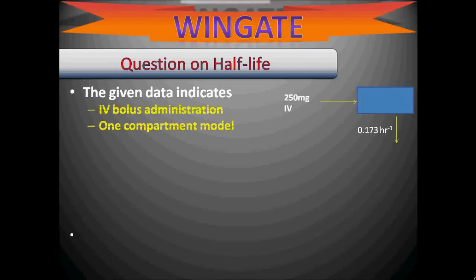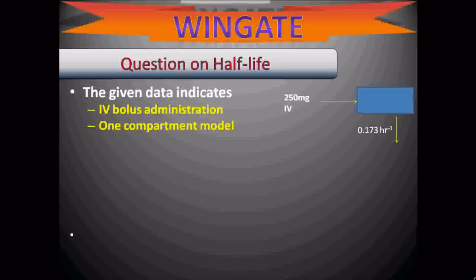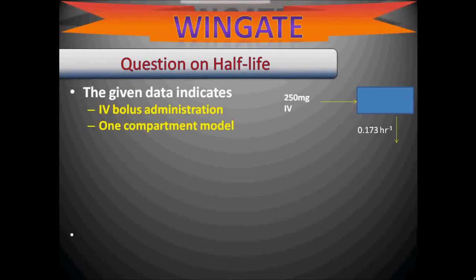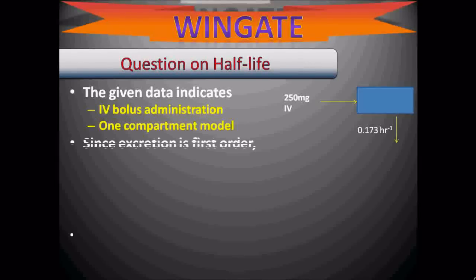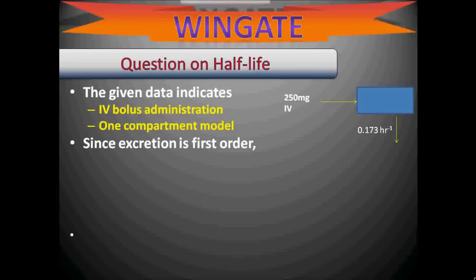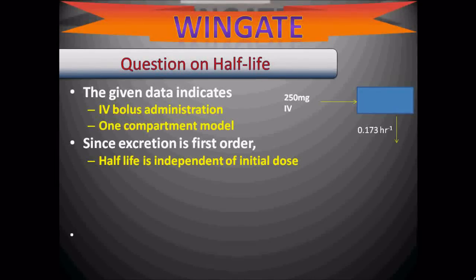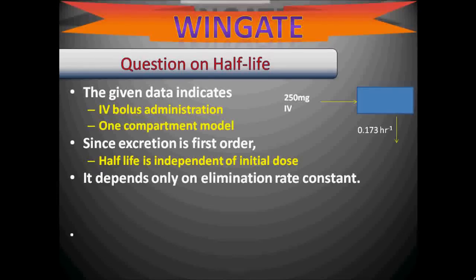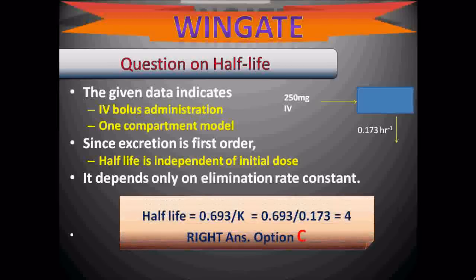The data indicates IV bolus administration, and the figure shows a one-compartment model (single central compartment). Excretion is first order, so half-life is independent of initial dose and depends only on the elimination rate constant. t½ = 0.693 / Ke = 0.693 / 0.173 = 4 hr. The right answer is option C.